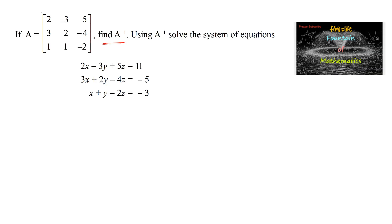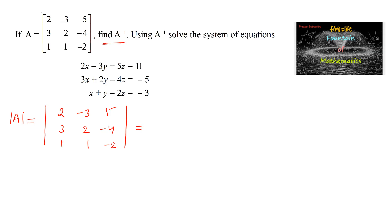First, let us find A inverse. For that, let's find the determinant of matrix A. The determinant of A equals the determinant of [2, -3, 5; 3, 2, -4; 1, 1, -2]. We expand: 2 times (2 × -2 minus 1 × -4), which gives 2 times (-4 + 4).